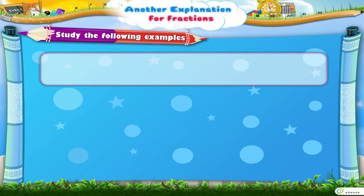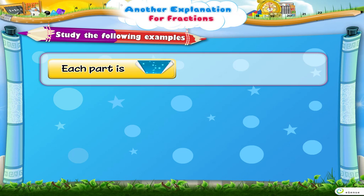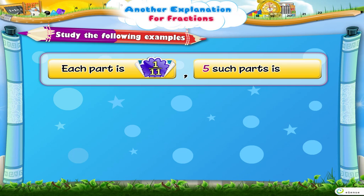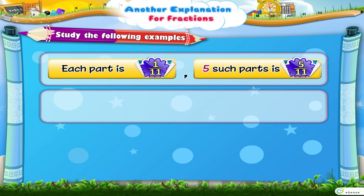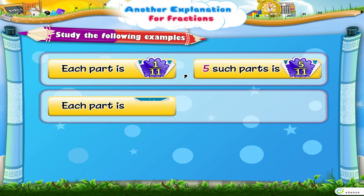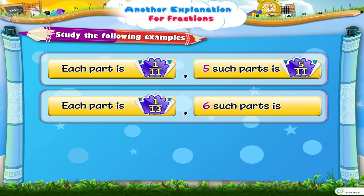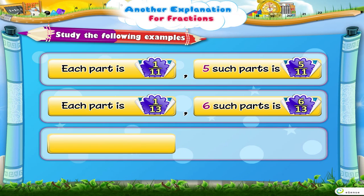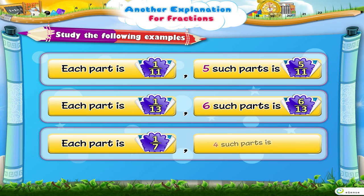Look at this one. Each part is 1 upon 11, so five such parts is 5 upon 11. Look at the next one — if each part is 1 upon 13, then six such parts is 6 upon 13. If each part is 1 upon 7, then 4 such parts will be 4 upon 7.